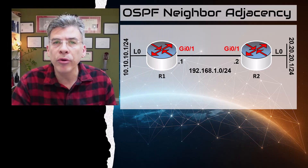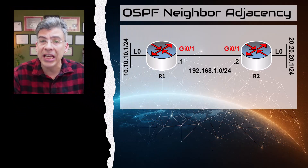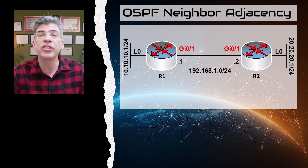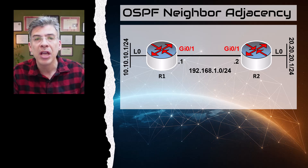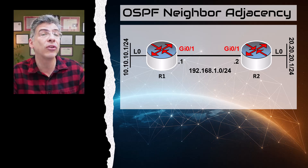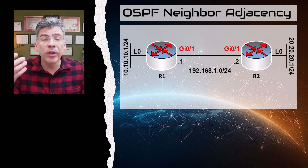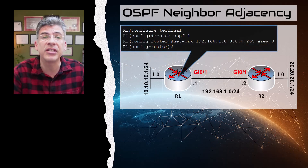Now that that's out of the way, let's continue talking about OSPF. Like most dynamic routing protocols, OSPF relies on the establishment of neighbor adjacencies between OSPF routers. In the previous video we saw the prerequisites for the establishment of OSPF neighbors, at least from a configuration point of view. Let's review once again the required configuration in order to establish an OSPF adjacency.